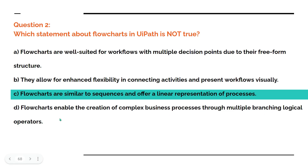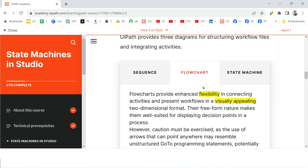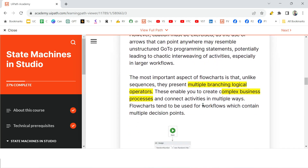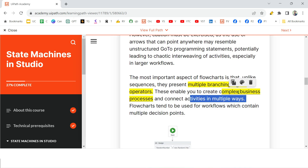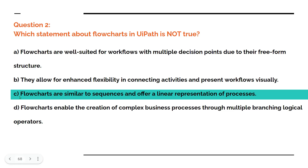Option D — flowcharts enable the creation of complex business processes through multiple branching logical operators — is also correct. The key phrase here is 'complex business processes'; flowcharts enable connecting activities in multiple ways. That is why C is the incorrect statement — flowcharts are not like sequences and do not offer a simple linear representation.